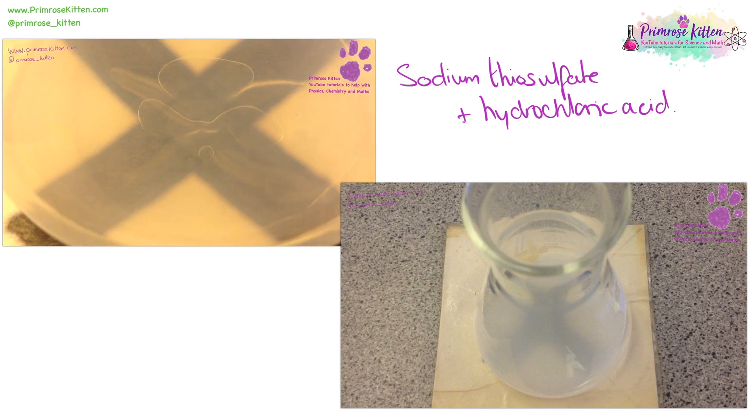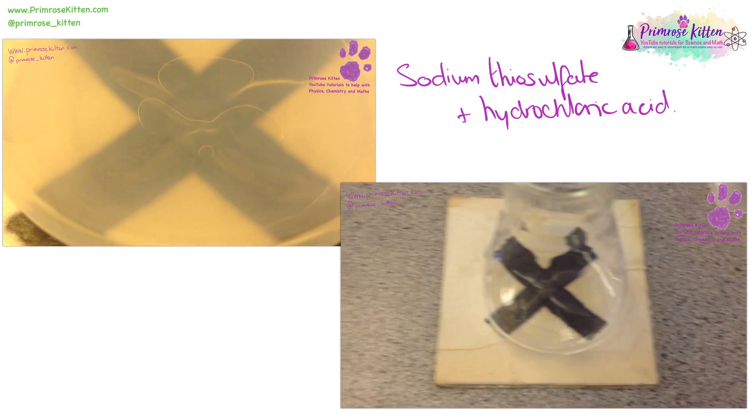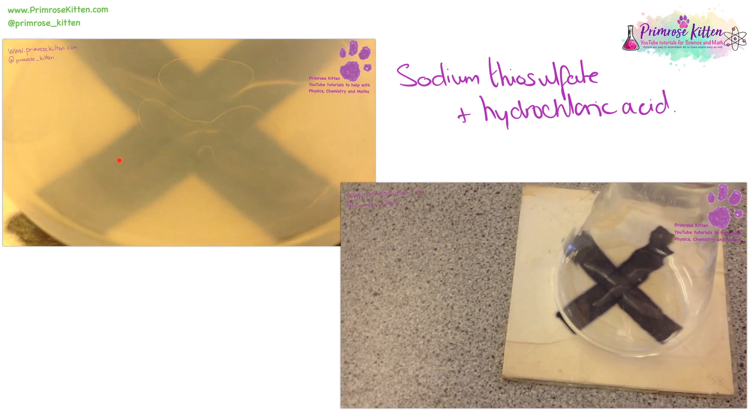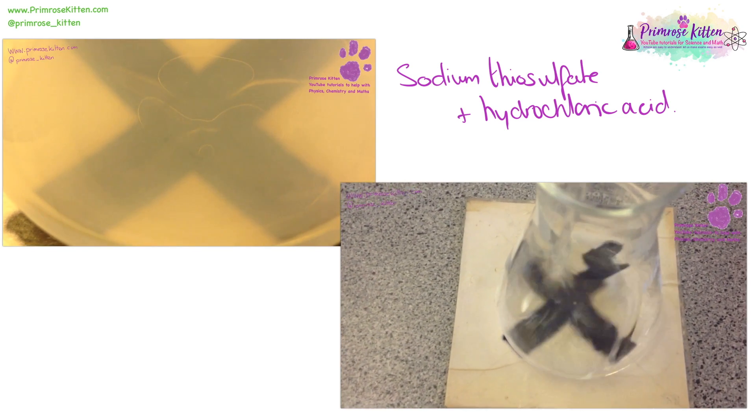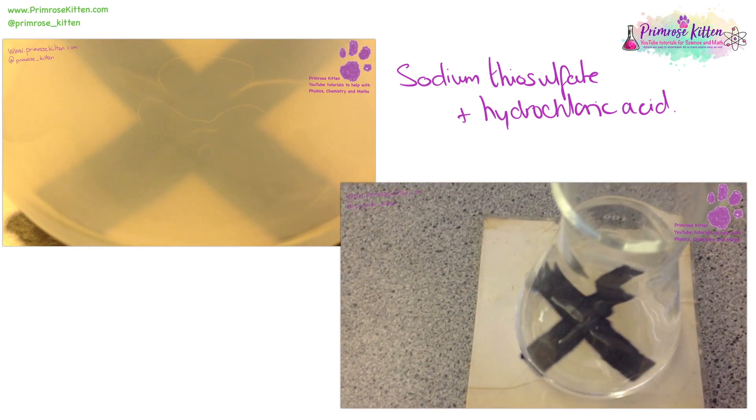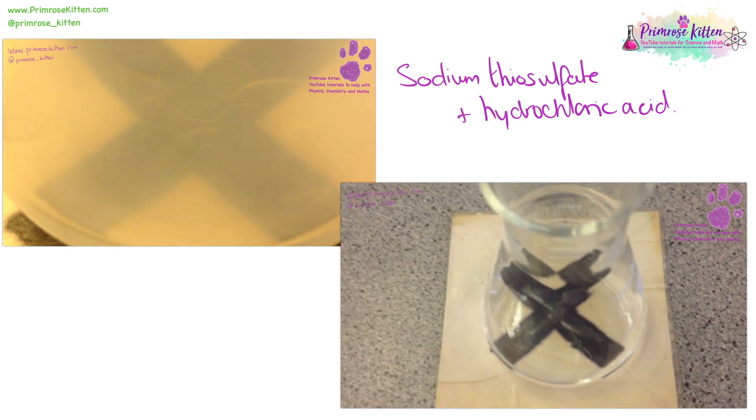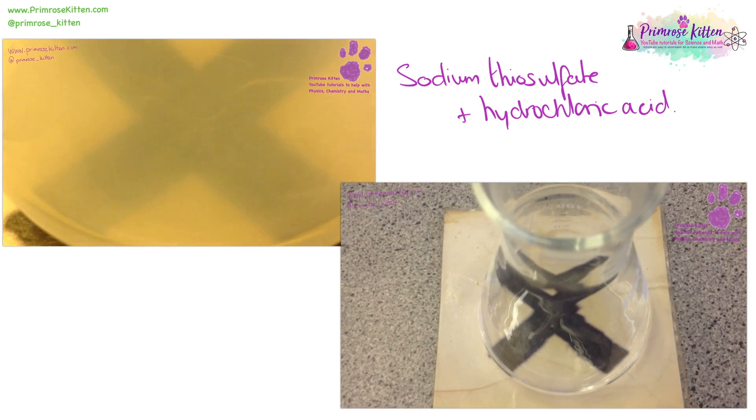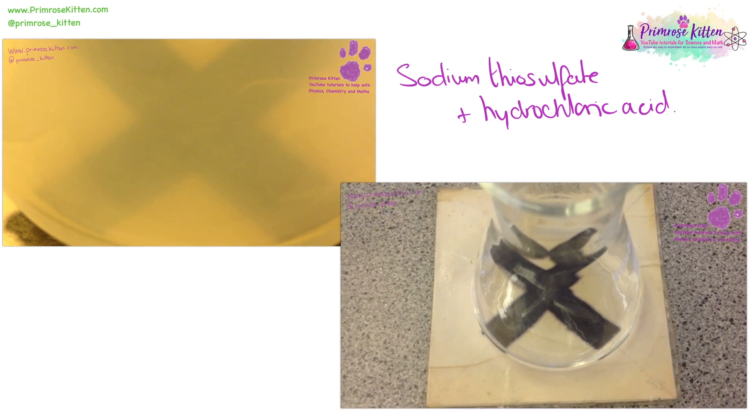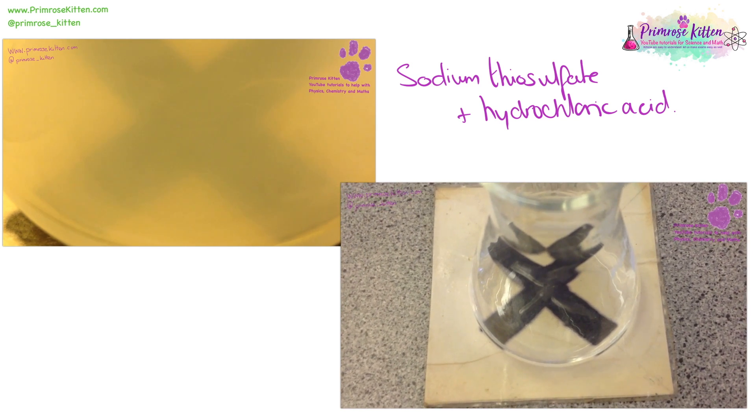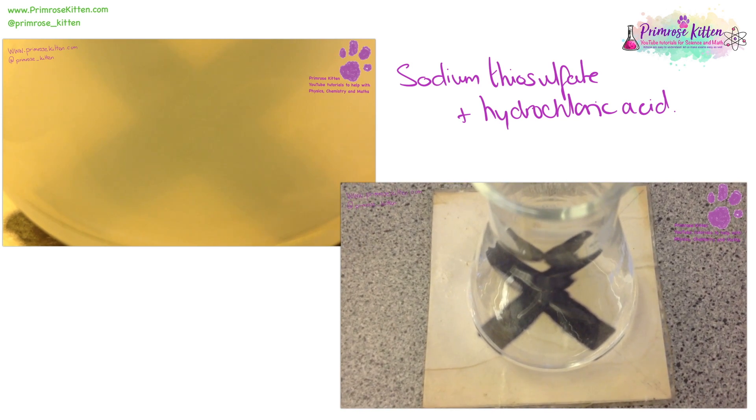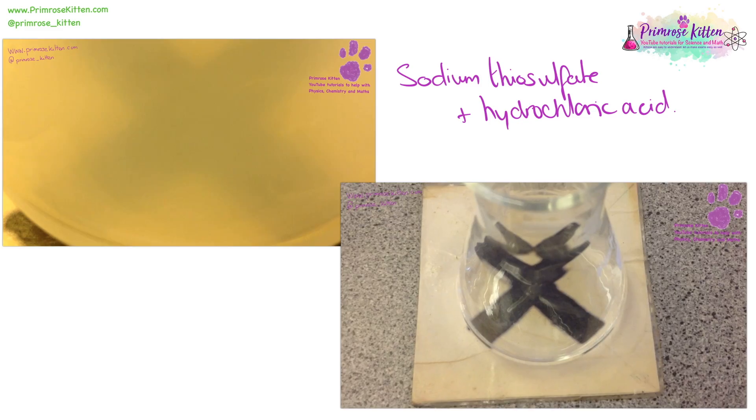You can see, as the reaction is going on, the cross which was visible at the beginning is becoming less and less visible. You need to make sure that the same person always measures the rate of reaction here, so differences in people's eyes don't mean that the differences in the time that the cross disappears affect the results.